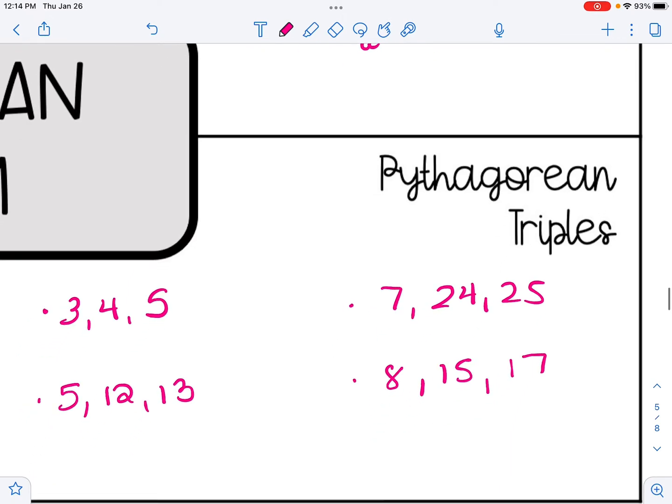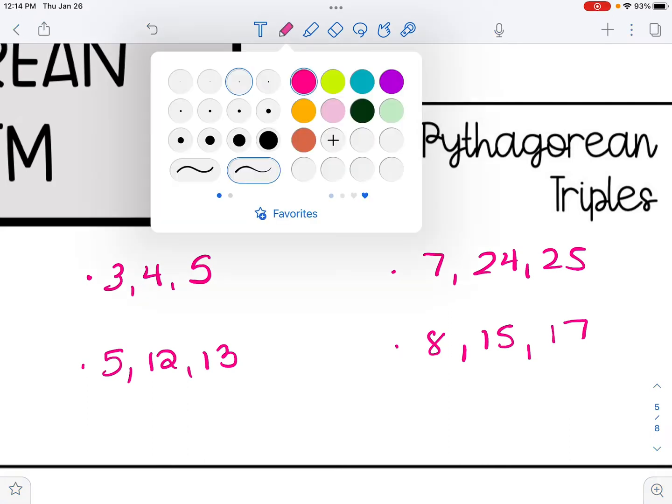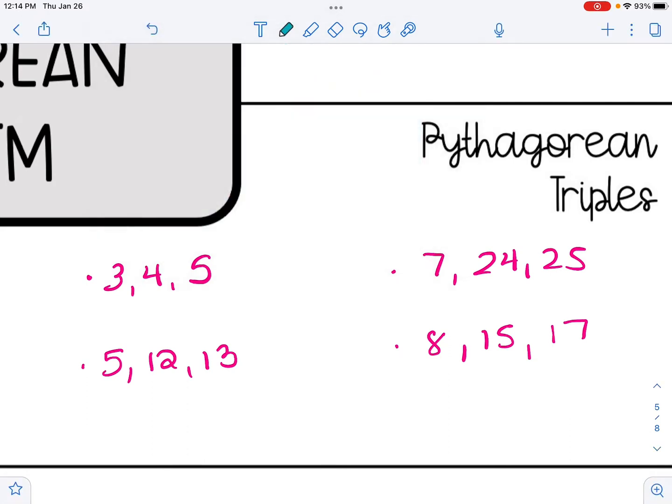It might be helpful to note some Pythagorean triples. These are basically sets of numbers that show up very frequently in Pythagorean Theorem problems. So I've listed four examples here: 3, 4, 5; 5, 12, 13; 7, 24, 25; and 8, 15, 17. I should note, too, that multiples of these triples also apply. So, for instance, 3, 4, 5 could be shown as 30, 40, and 50 as the size of a right triangle, basically taking that initial triple and multiplying each side by 10.